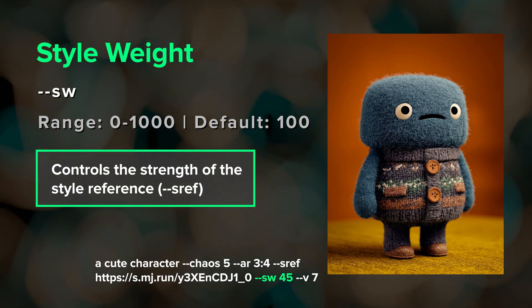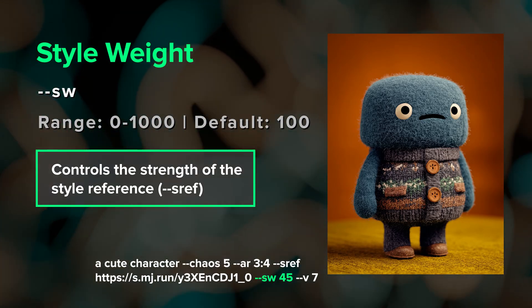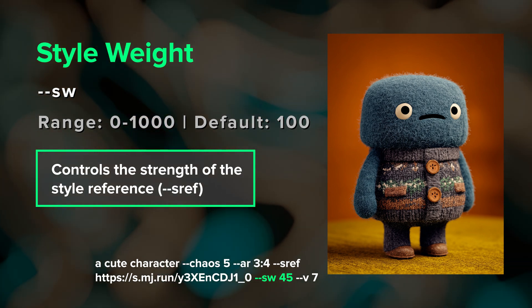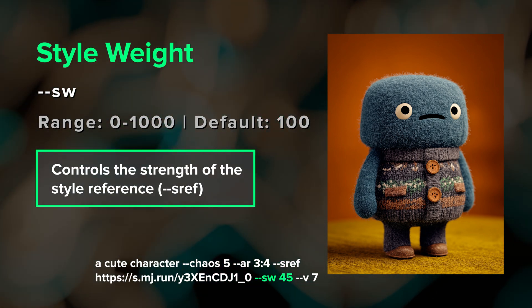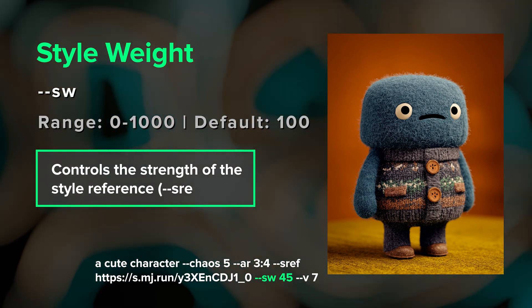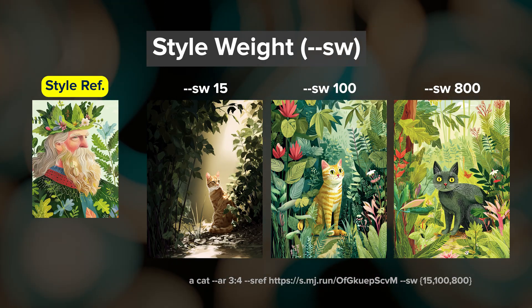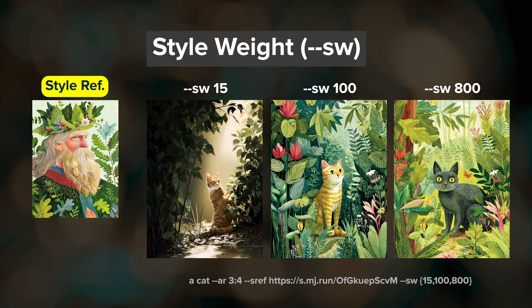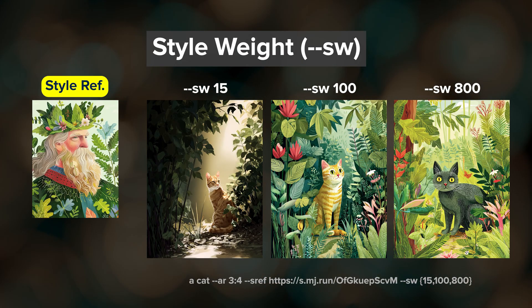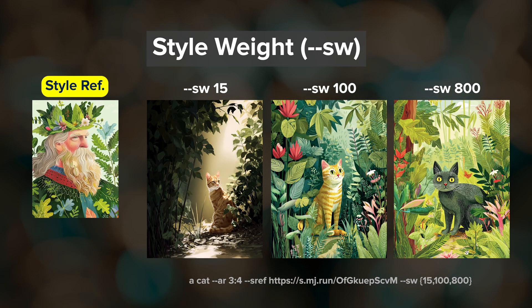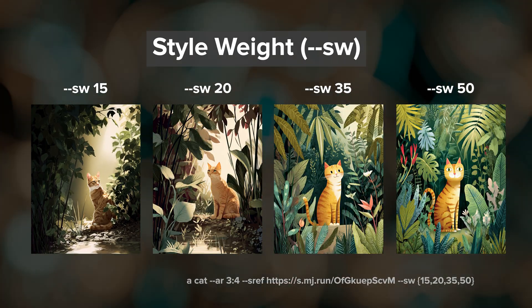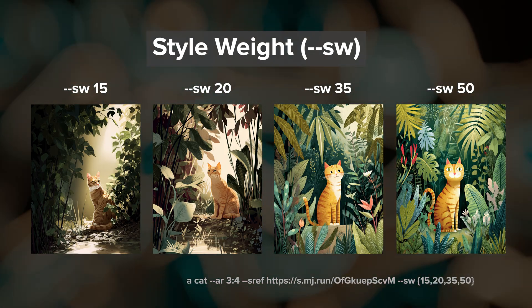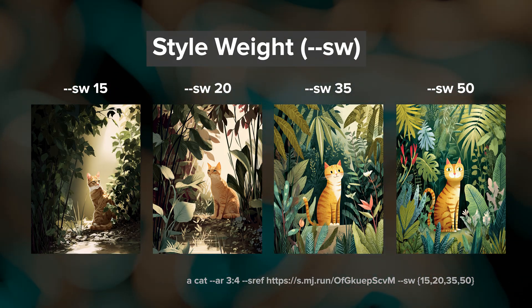We can control how strongly a style reference affects the results by adjusting the style weight parameter --sw. The default value is 100 and it accepts values from 0 to 1000. The style weight scale is not linear. You'll see the biggest changes between 0 and 100. So if you find your sref is too overpowering or want a more subtle influence, try lowering the style weight to something between 15 and 50.